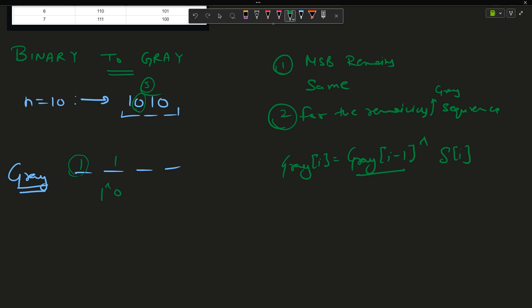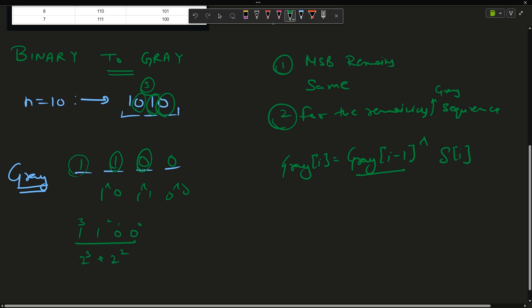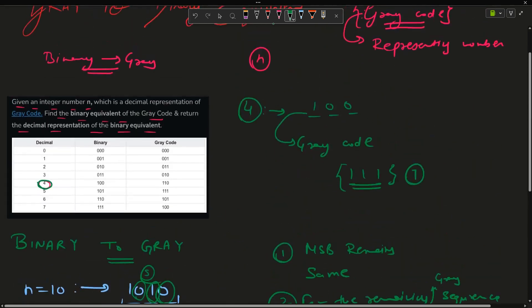1 XOR 0 is 1 because they are different, so XOR gives 1. Next: 1 XOR 1 = 0 because they are identical. Then: 0 XOR 0 = 0. So my Gray code is 1100. The decimal of 1100 is 2³ + 2² = 8 + 4 = 12. My answer to the question will be 12.